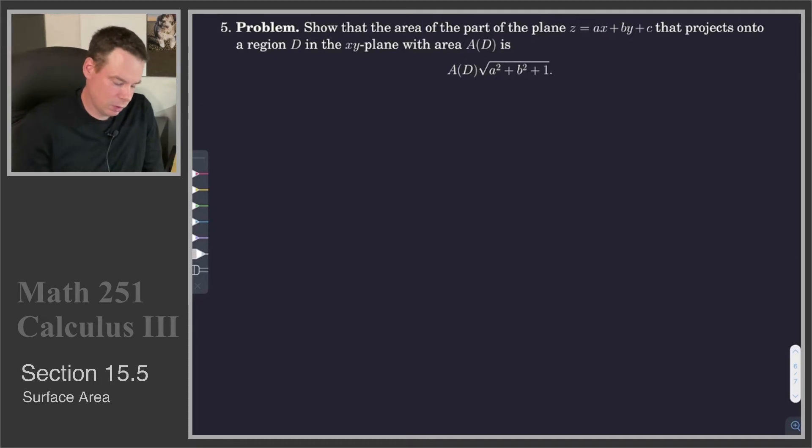We'll do one more example in the surface area section. What we want to do is show that the area of the part of the plane that projects onto the region D in the xy-plane with area A(D) is given by A(D) times the square root of A squared plus B squared plus 1. So what is this really saying?